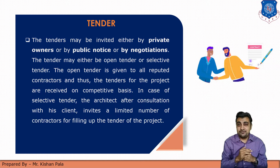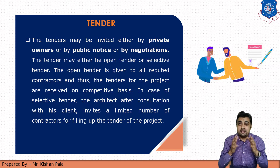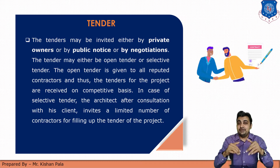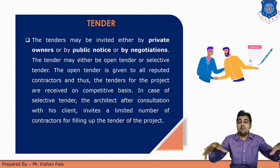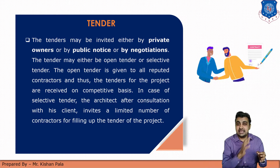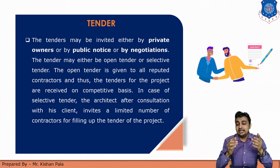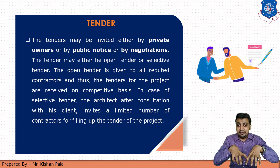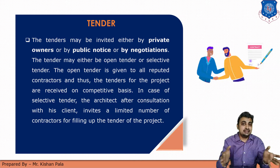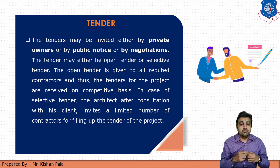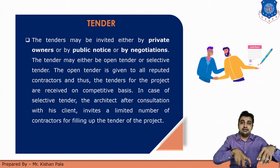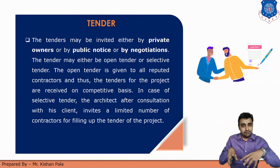If we talk about the types of tender, there may be three types. For example, a government body wants to construct a particular road construction work. In that case, the government body will offer that road construction work to the open market — this is the first type of tender. In the second case, for example, you are an owner working with a particular private consultancy and want to offer construction of a specific residential building involving specialized work — such as pre-tensioning of elements, grid slab, or tapered section of steel structure. You know that type of work will be done by only a few contractors — that is the limited work, and this is the second case.